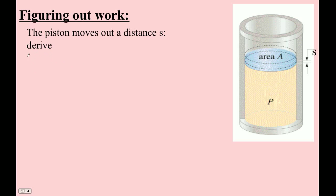If that's the case, then we've got two formulas. The first one is that work equals force times distance. And then the other one is that pressure is force divided by area. And then the other formula is that the volume of a cylinder is the area of the top times the height of the cylinder. That area times s is going to be the volume. These are our three formulas.